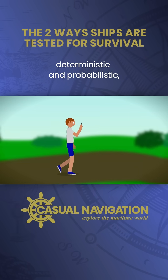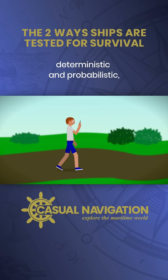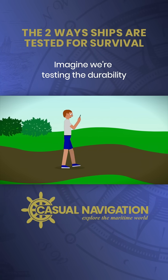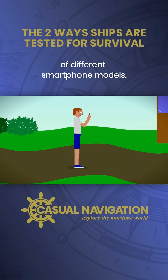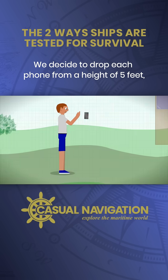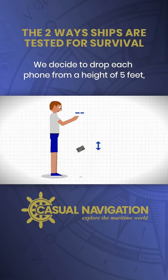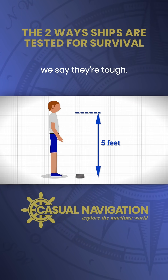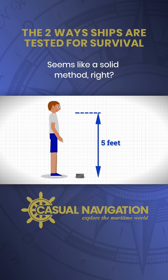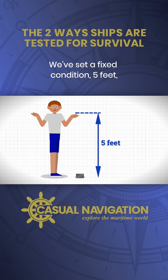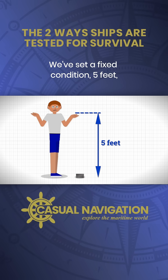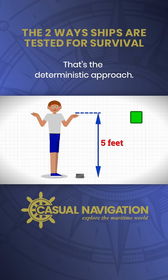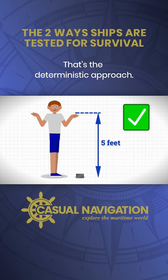To explain the difference between deterministic and probabilistic, let's use a simple example. Imagine we're testing the durability of different smartphone models. We decide to drop each phone from a height of 5 feet, and if they don't crack, we say they're tough. Seems like a solid method, right? We've set a fixed condition, 5 feet, and checked the result. That's the deterministic approach.